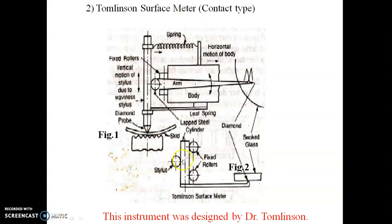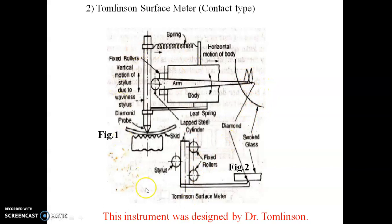In the Tomlinson surface meter, there are two rollers and the stylus and probe are connected because of spring tension. When it moves over peaks and valleys, it moves up and down. That up-and-down movement is converted into the movement of the arm, which records the exact surface roughness of an object in an enlarged scale.